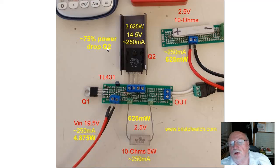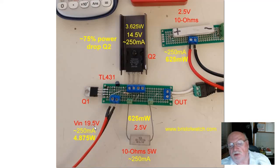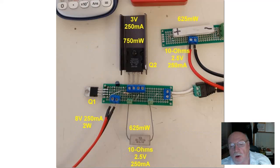The lesson here is: if you are using a constant current source, consider that your load produces the output voltage. Look at the output voltage you expect, add about 5 volts to it, and you should get an input voltage close to what you need. The output voltage of 2.5 volts is a long way from 19.5 volts.